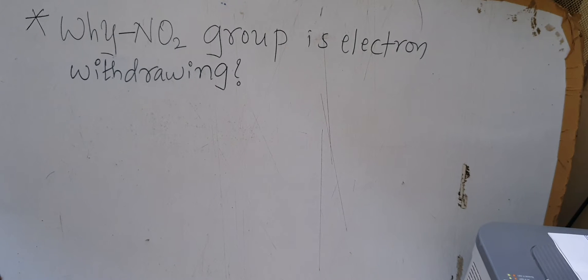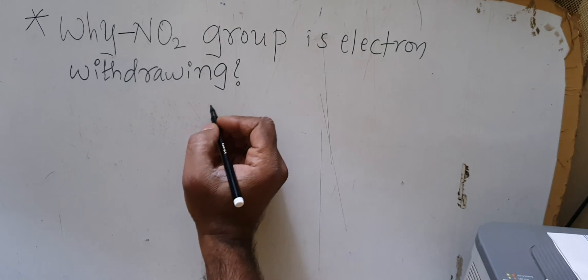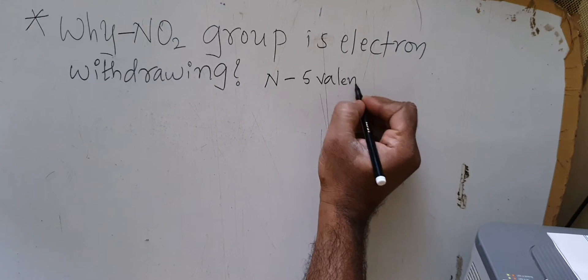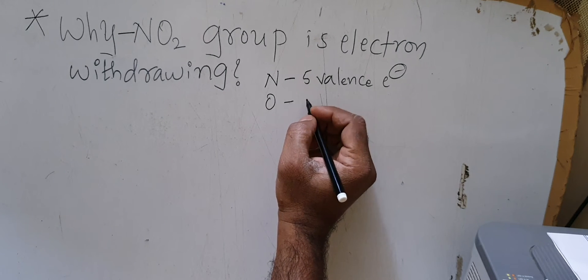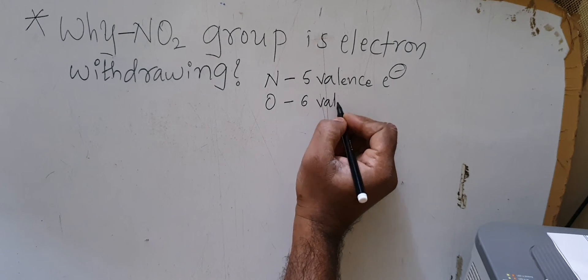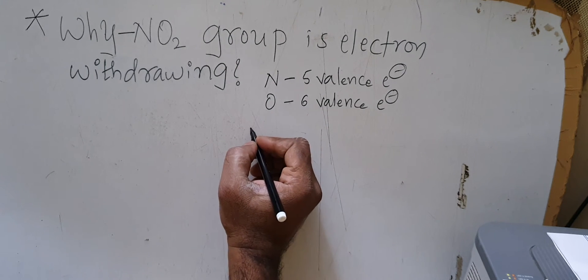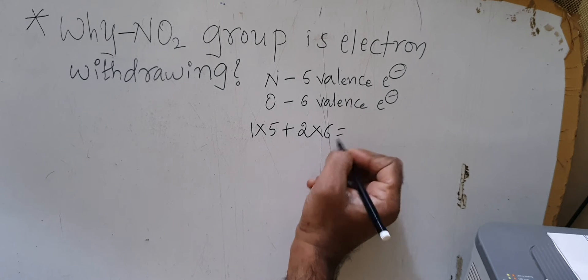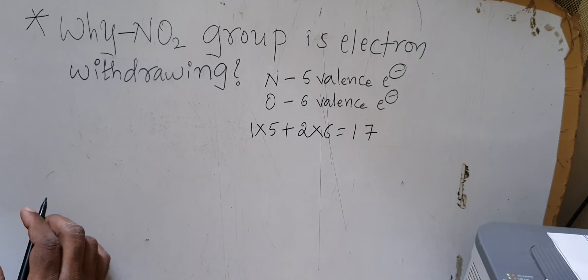In order to explain the electron withdrawing nature of this nitro group, let me write the Lewis structure for nitrogen — not nitrogen dioxide, but nitrogen from the nitro group. Nitrogen has five valence electrons. Oxygen has six valence electrons. Since there is one nitrogen atom: 1 × 5 = 5, and two oxygen atoms: 2 × 6 = 12. So there are 17 valence electrons in total.